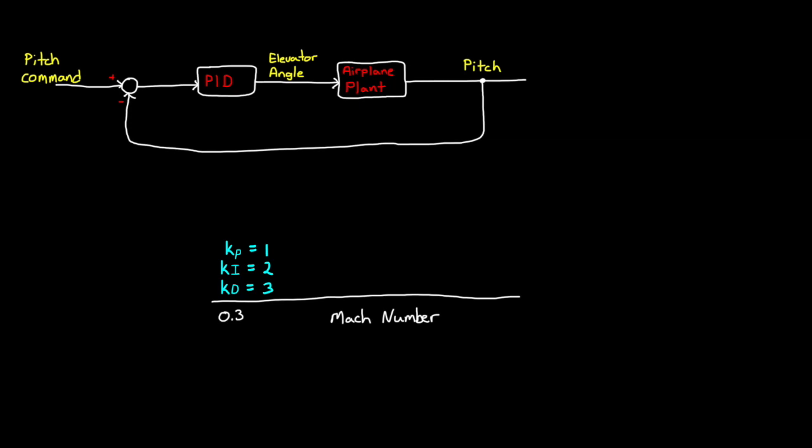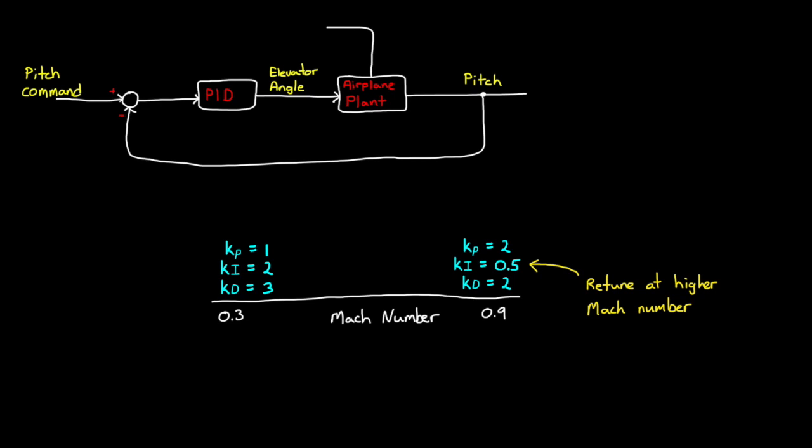At this point, we've determined that when the aircraft speeds up to a high Mach number, these gains are no longer sufficient for the performance that we want, and we retune the PID for this new operating condition. Now we have another set of gains. We have two separate sets of gains, so intuitively it would make sense to just measure the speed of the airplane in real time, and then select one set of gains when it's flying slowly, and another set of gains when it's flying fast. This is a very simple gain schedule.